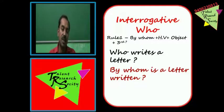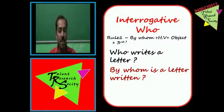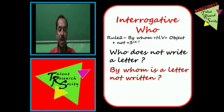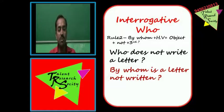Rule 1 apply karte hain: 'Who writes a letter?' — present indefinite, helping word 'is'. 'Who' ke sthan pe 'by whom', helping word 'is', object 'a letter', third form 'written'. Sentence: 'By whom is a letter written?' Rule 2 example: 'Who does not write a letter?' — 'by whom', 'is', object 'a letter', 'not', third form 'written'. Sentence: 'By whom is a letter not written?'